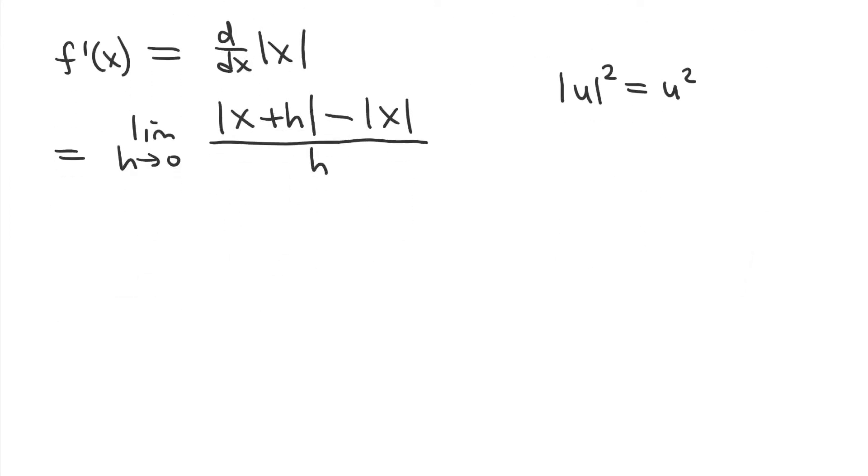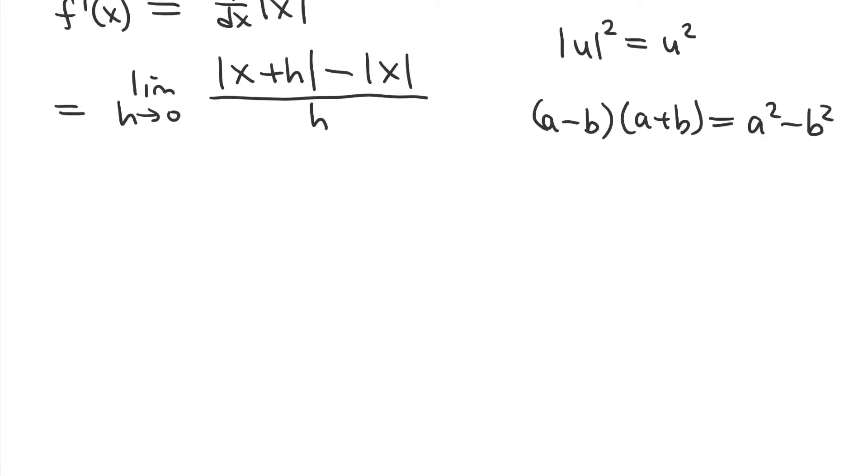And so, in the numerator, what we're going to do is we're going to multiply the numerator by its conjugate and take advantage of the difference of squares. Remember that a minus b, which is kind of like what we have in the numerator, absolute value of x plus h minus absolute value of x, times a plus b is a squared minus b squared. And here, a and b are going to be both our absolute value expressions. And so, now our result is going to be with them squared. And so, we're going to clear the absolute value. So, here's how it's going to work.